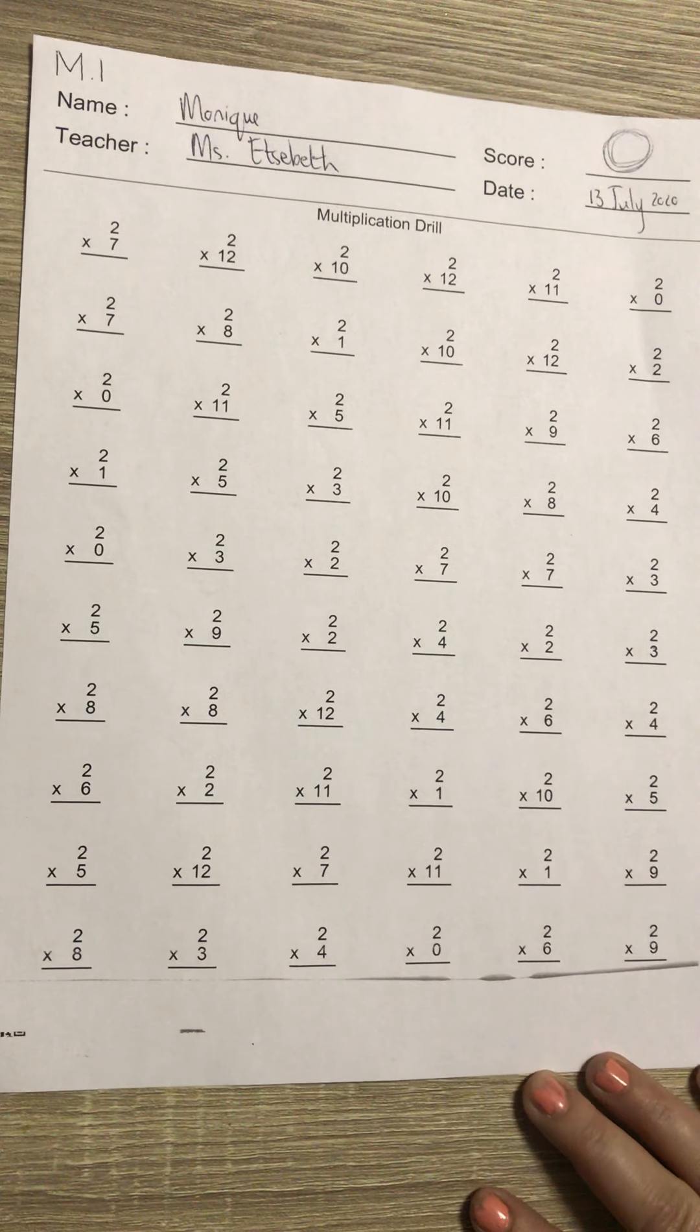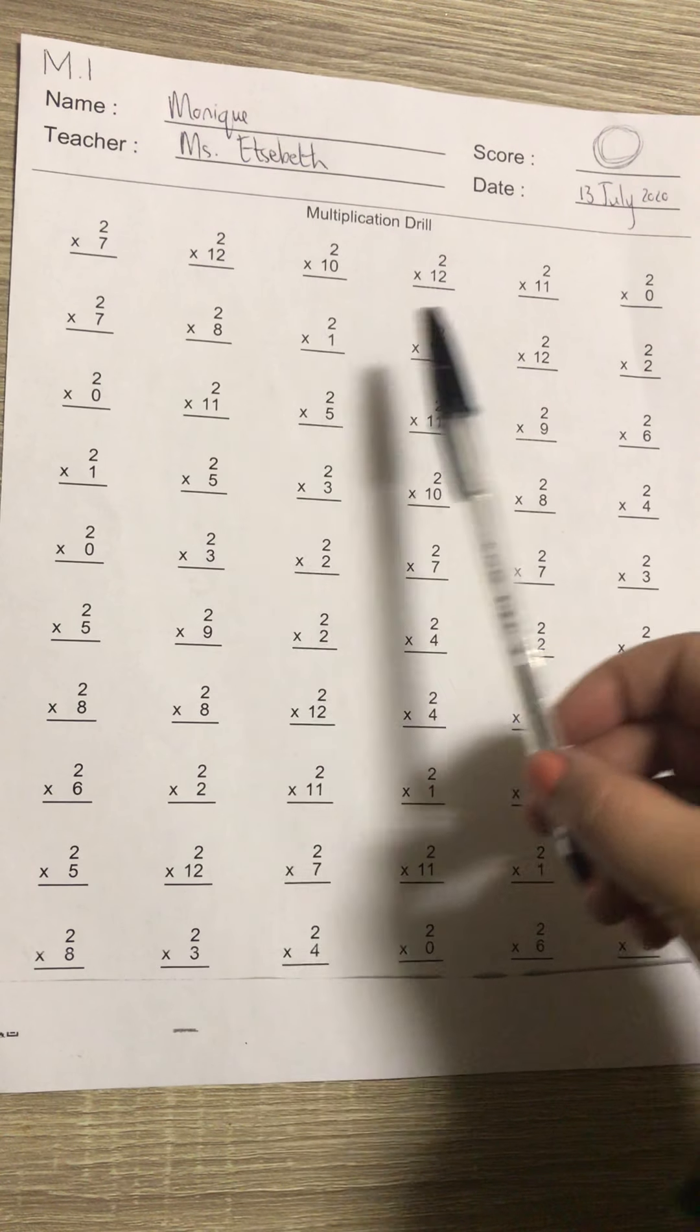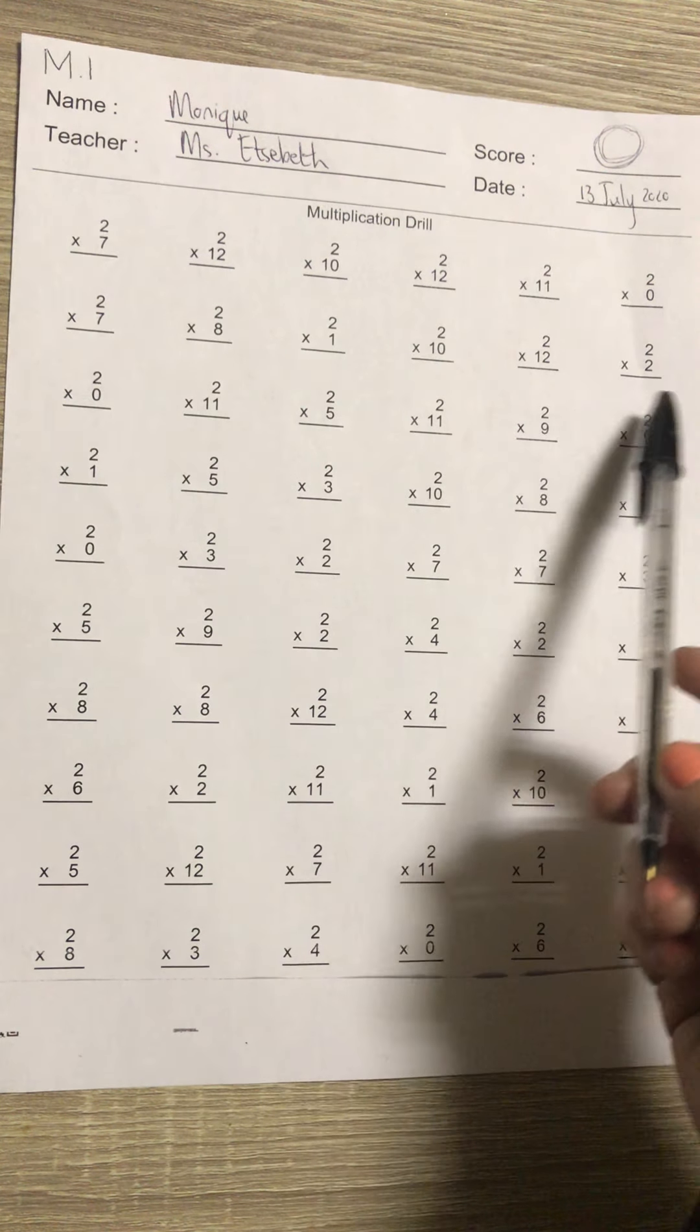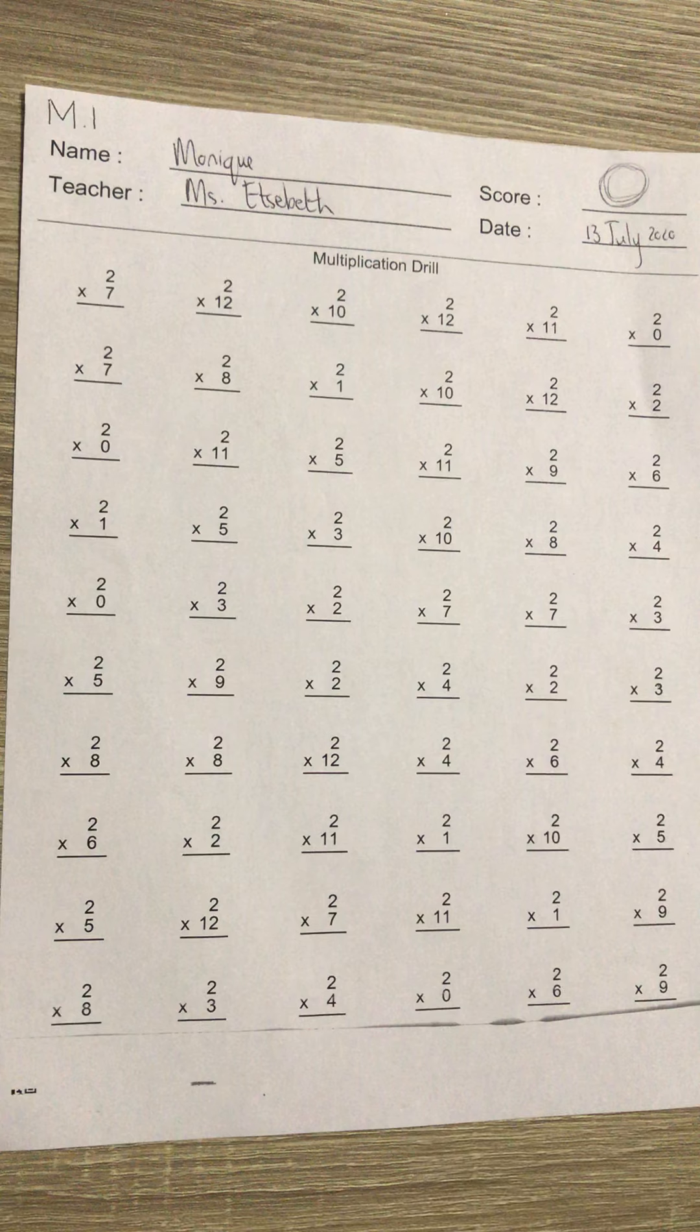There are a whole bunch of times two sums, and this time we're not going to do it line for line or column for column. You are going to try and do all of the sums on the page within three minutes. That means you have an entire minute to finish 20 sums. I'm going to give you three minutes. Don't start yet.